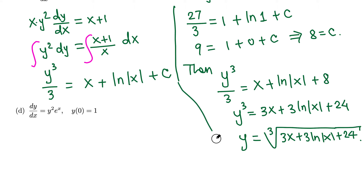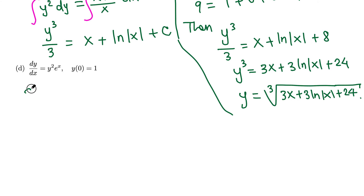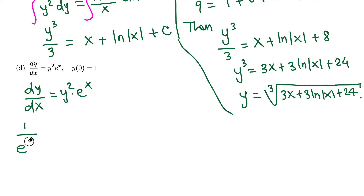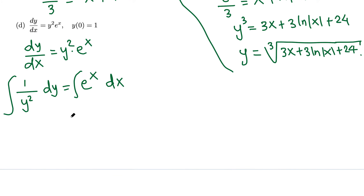For the last problem, we have dy over dx equals y squared times e to the x. We separate variables by dividing both sides by y squared and multiplying by dx, placing function of y on the left and function of x on the right: 1 over y squared dy equals e to the x dx. Now integrate both sides.